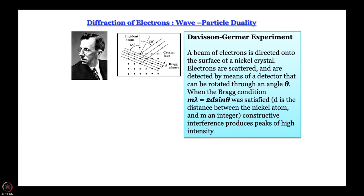In the Davison-Germer experiment, a beam of electrons from an electron gun — one can think of a cathode ray tube with a hole at one end, so that cathode rays generated would come out — a collimated beam of electrons was made incident on a nickel crystal. The dispersed electrons were detected by a detector that could be rotated through an angle theta, and a diffraction pattern was obtained according to m·lambda = 2d·sin(theta). This tells us that even electrons can give diffraction and therefore have wave-like nature.